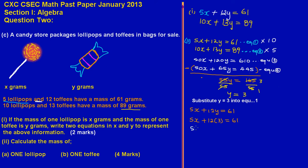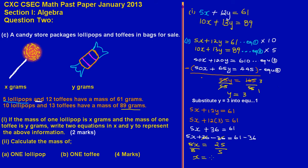12 × 3 = 36, so we have 5x + 36 = 61. To make X the subject, subtract 36 from both sides: 5x = 61 − 36 = 25. Dividing both sides by 5 gives X = 5. So we have Y = 3 and X = 5.